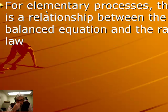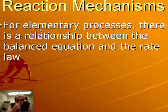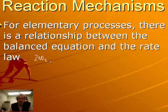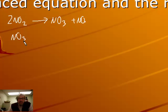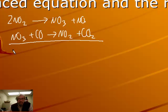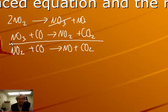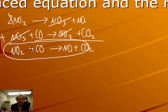For elementary processes there is a direct relationship between the balanced equation coefficients and the rate law. Consider the mechanism where 2NO2 → NO3 + NO, and then NO3 + CO → NO2 + CO2. Summing these gives the overall reaction NO2 + CO → NO + CO2, since NO3 cancels from both sides along with one NO2.